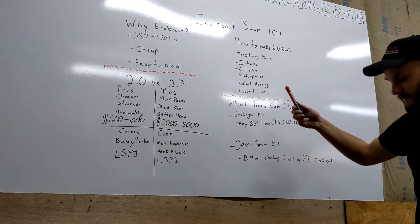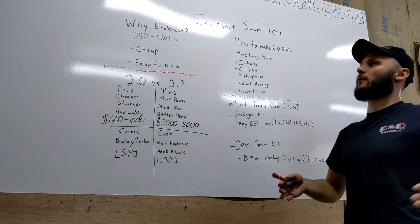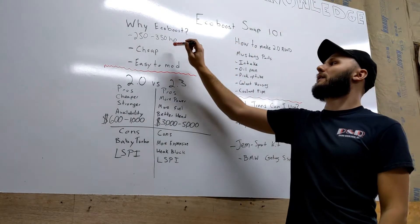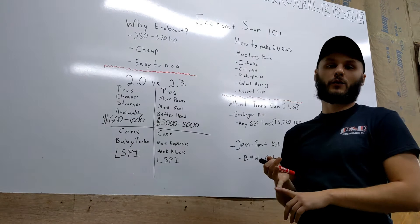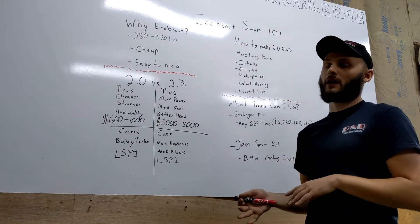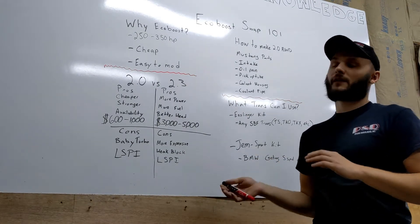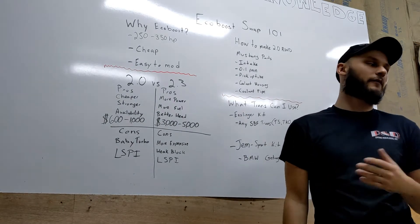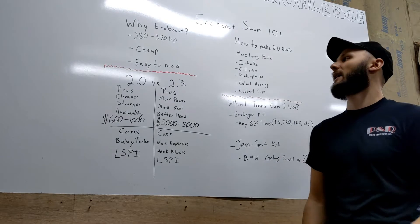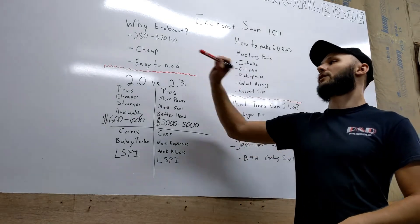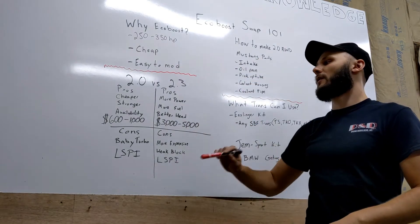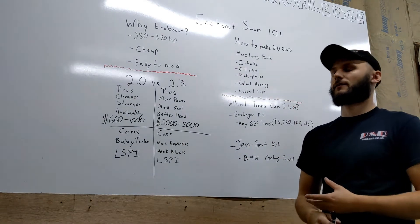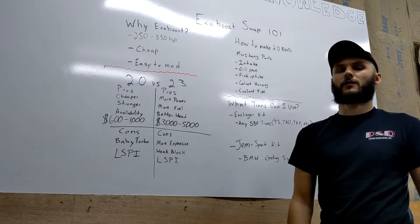The 2.0 can make about 250 flywheel horsepower stock. The 2.3 will make about 350 horsepower with a little bit of mods, nothing internal, just bolt-on stuff like an intercooler, intake, downpipe, that kind of stuff. They're super cheap, especially for the 2.0. You can find them for $600 to $1000 all day long on LKQ or other places.